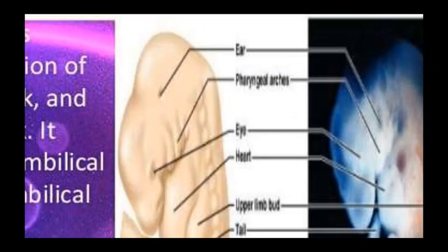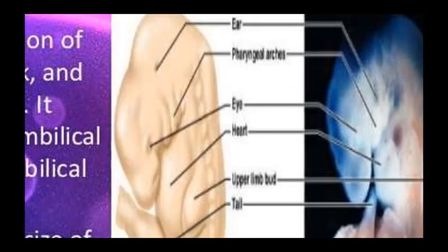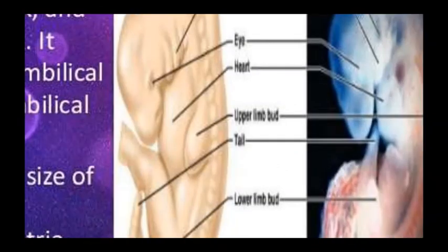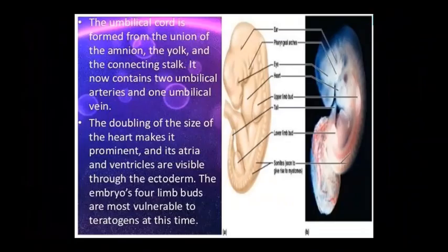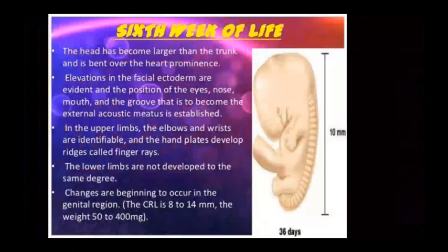At this stage, structures including the ear, pharyngeal arches, eye, heart, upper limb bud, tail, lower limb bud, and somites all become visible on the embryo.